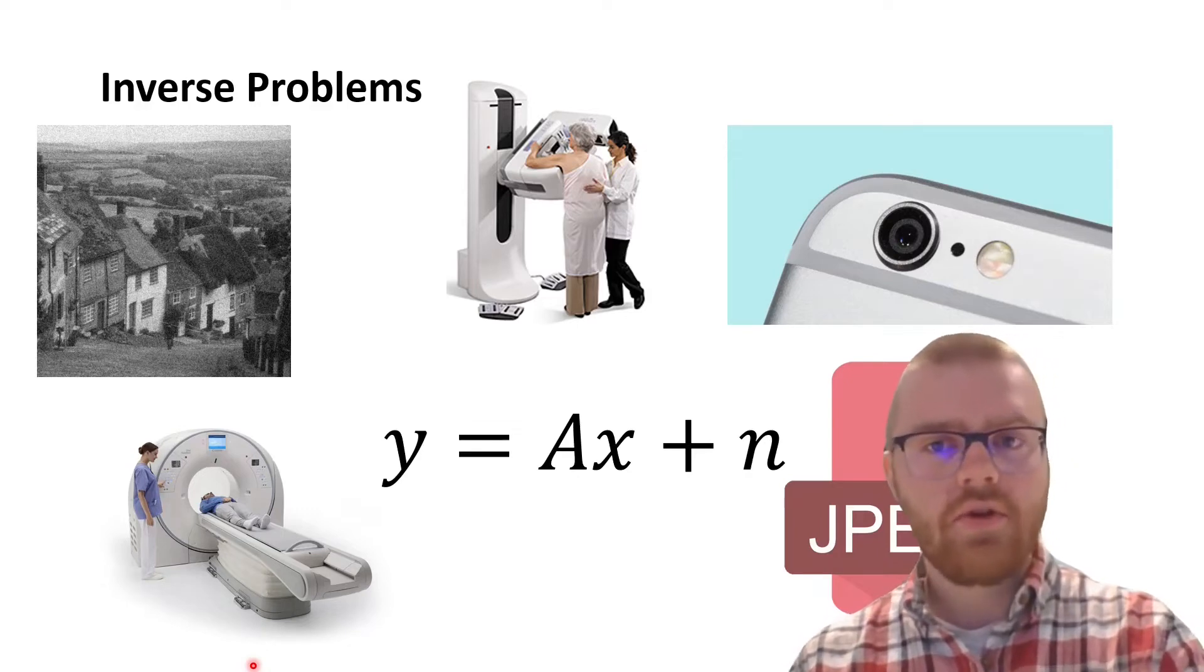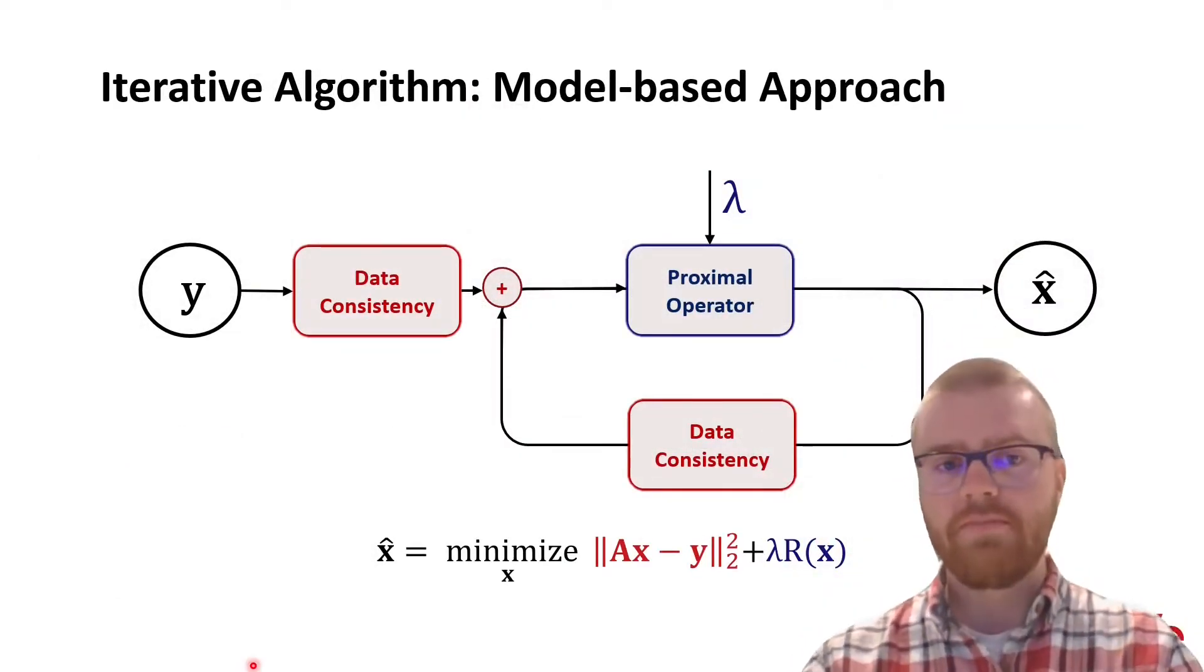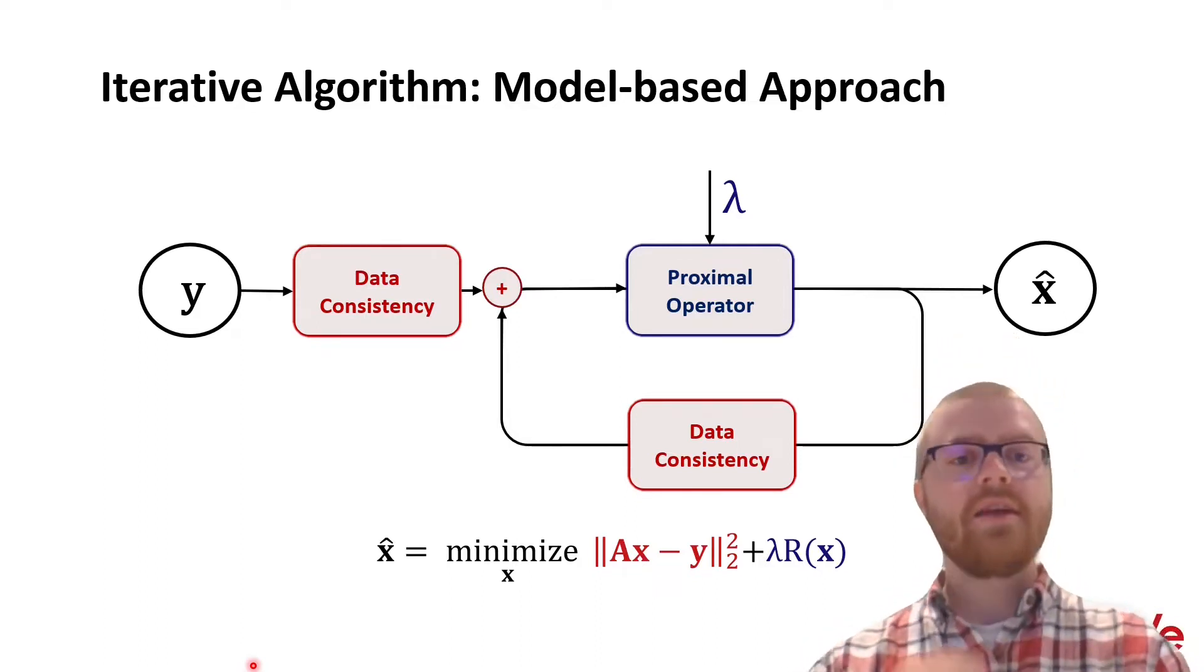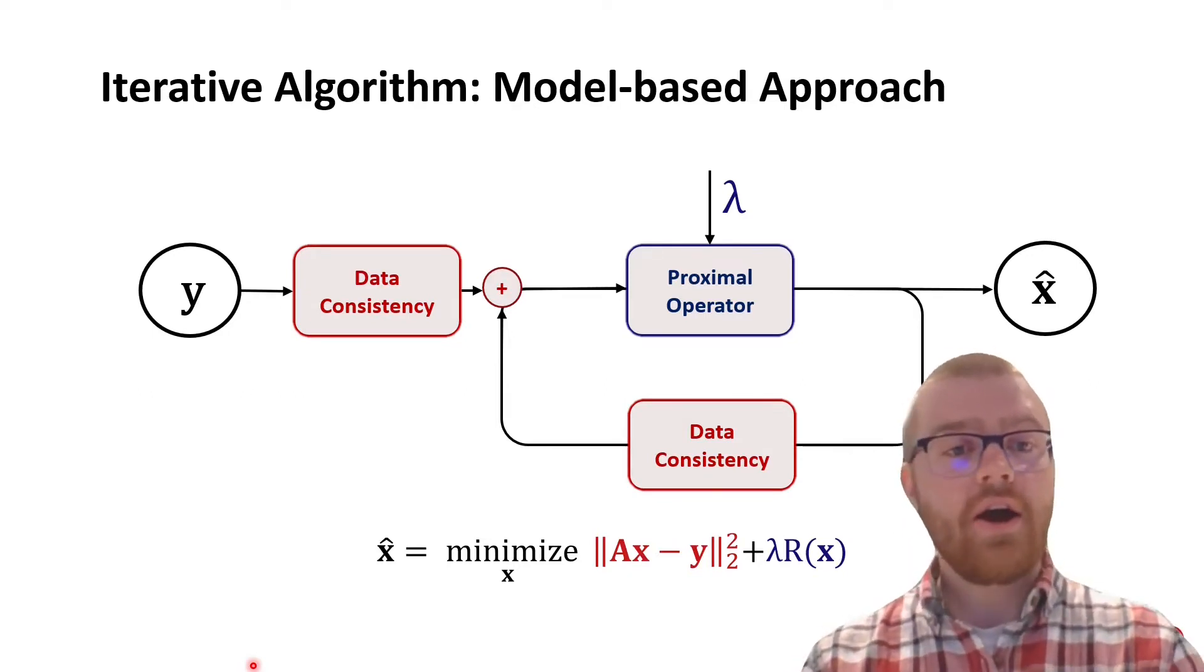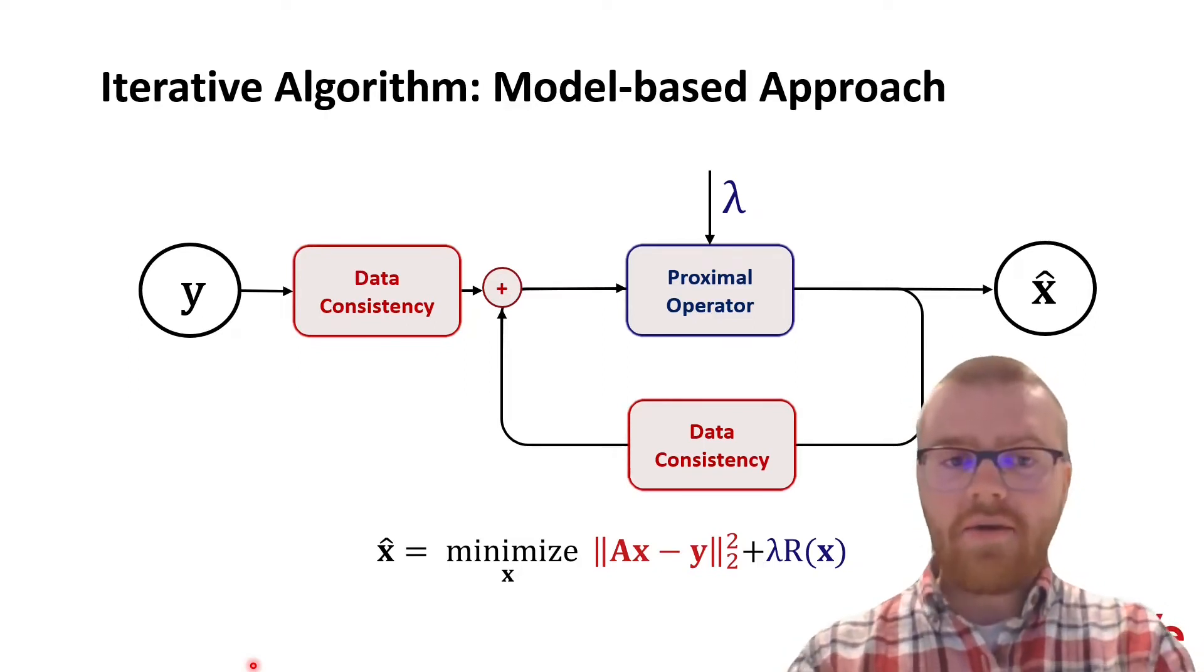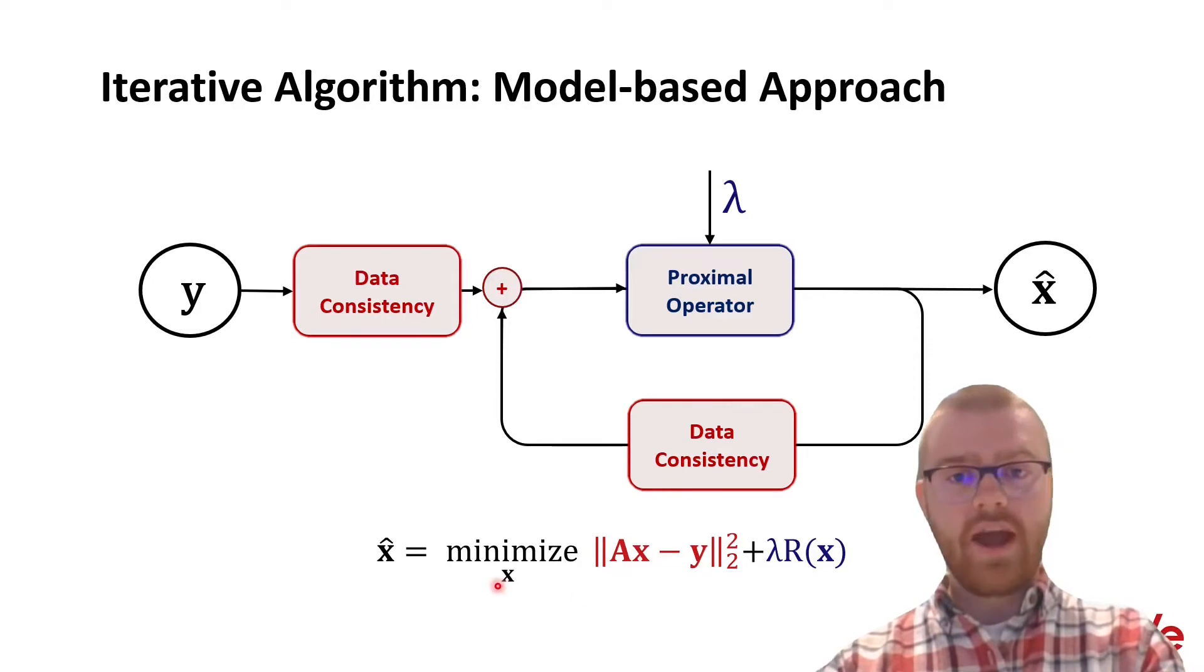A popular way to solve inverse problems are with iterative algorithms, for example ISTA, iterative shrinkage and thresholding. And the idea behind this is that we have many iterations where we are doing two steps, namely data consistency, where we are trying to make sure that our recovered signal here, X hat, is close to our measurement Y.